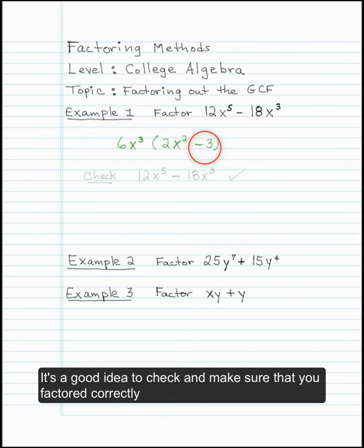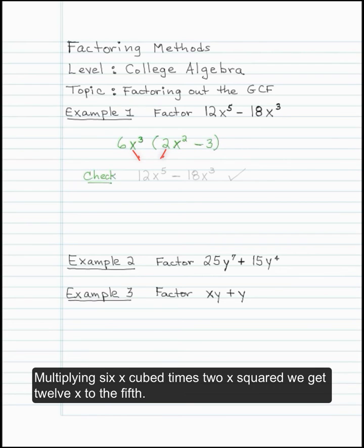It's a good idea to check and make sure that you factored correctly. Multiplying 6x cubed times 2x squared, we get 12x to the 5th.